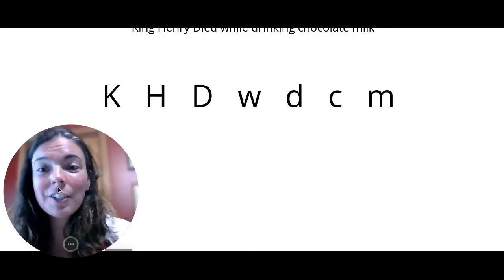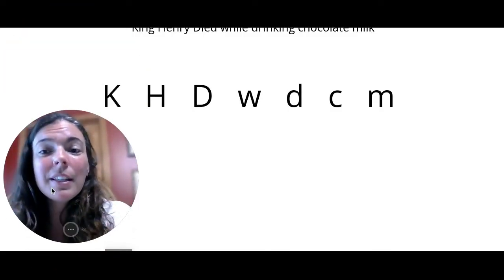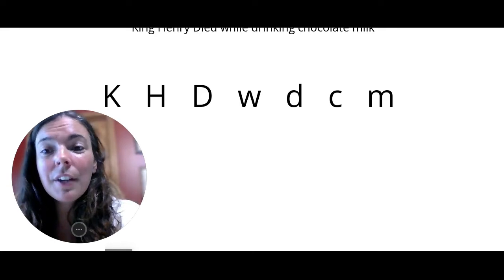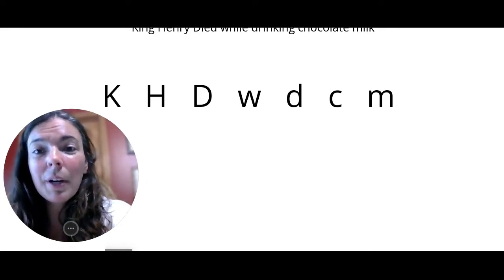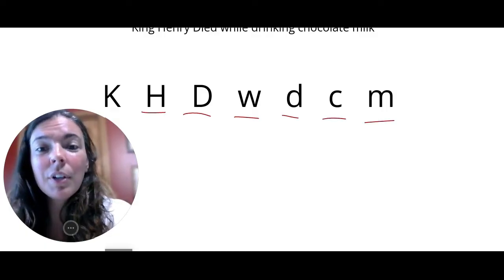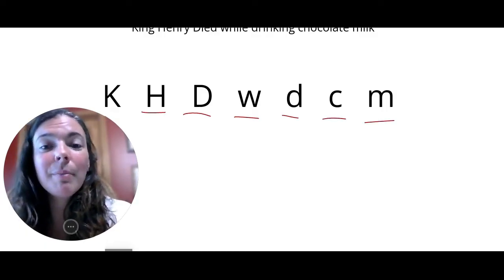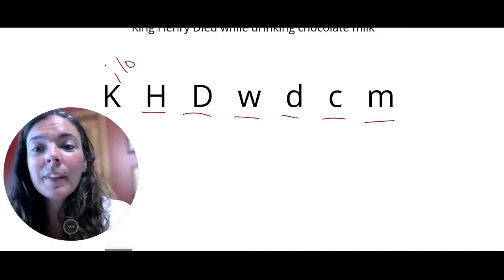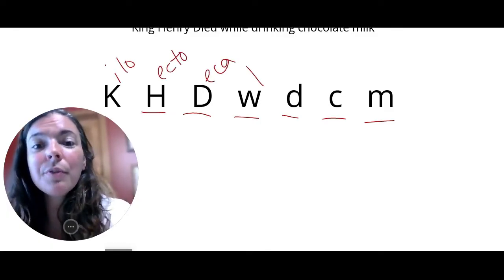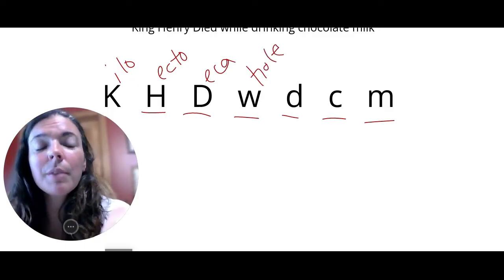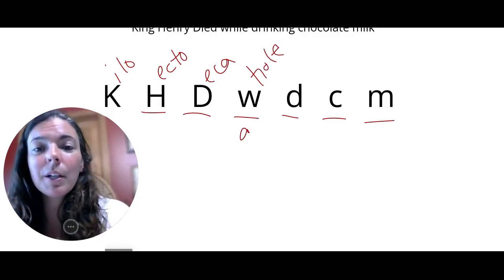King Henry died while drinking chocolate milk. Each of these letters in our mnemonic represents a different prefix for our different metric units. So we have kilo, we have hecto, deca, w stands for our whole units. When I'm talking about whole units in the metric system, I'm talking about grams, meters, and liters.